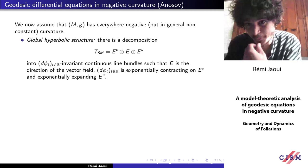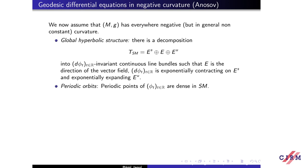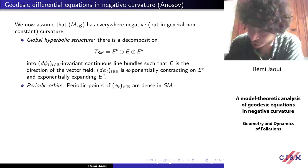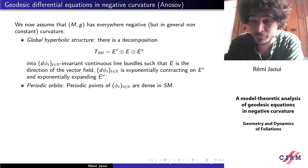A second known result is that the periodic points of the flow are dense in the sphere bundle — that is, in the phase space of the differential equations. In fact there are much stronger results: there are many periodic orbits in many senses, using the Anosov closing lemma, which shows that if you have an orbit close to being periodic, you can find a nearby periodic orbit.